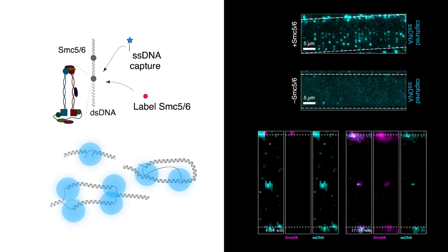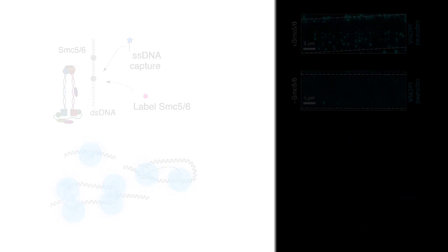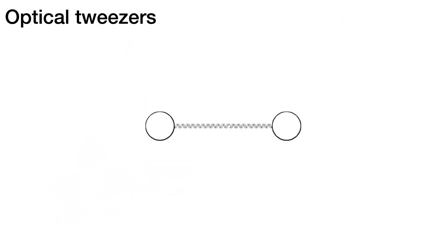So to targetly create substrates that resemble these single-stranded, double-stranded DNA junctions, we move to optical tweezers, where we can tether double-stranded DNA between two beads, and then we move one of the beads. What will happen is that at random nicks on the DNA, the DNA will unravel and expose single-stranded DNA.